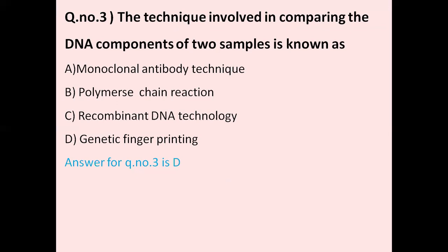Question number three: The technique involved in comparing the DNA components of two samples is known as — option A monofluonal antibody technique, option B polymerase chain reaction, option C recombinant DNA technology, option D genetic fingerprint. The correct answer is genetic fingerprint. In this technique, the analysis of DNA is used in forensic lab crime. The correct answer is genetic fingerprint.